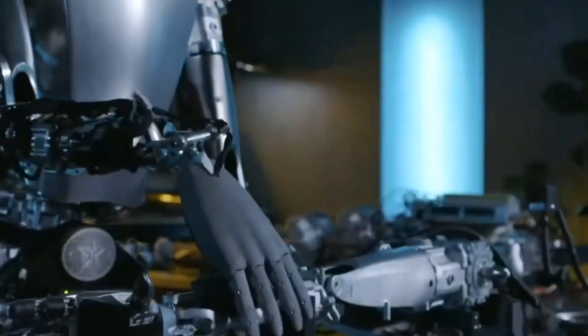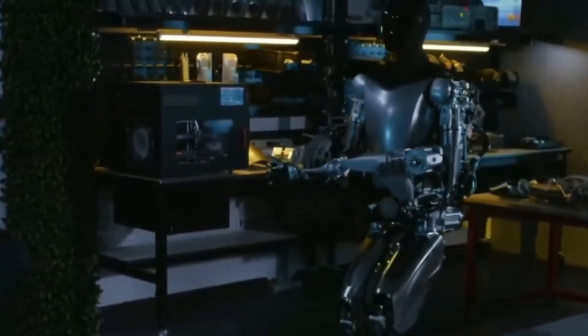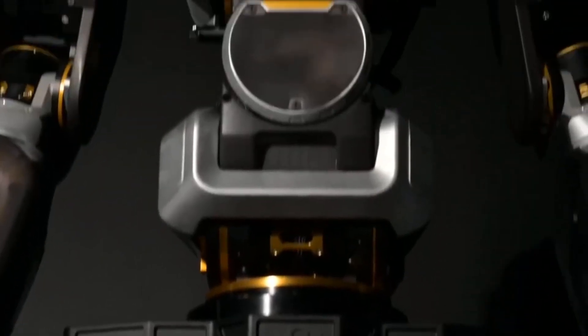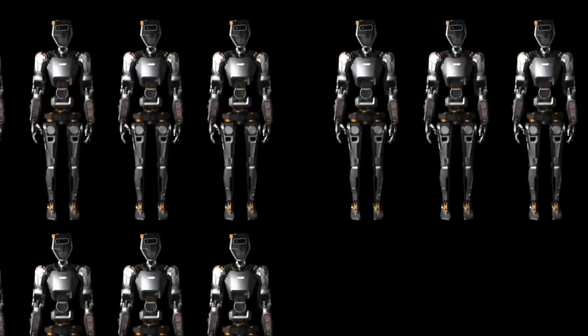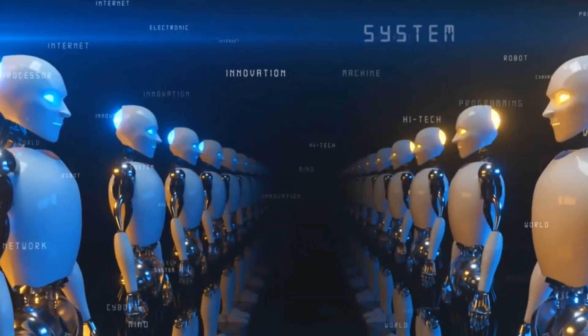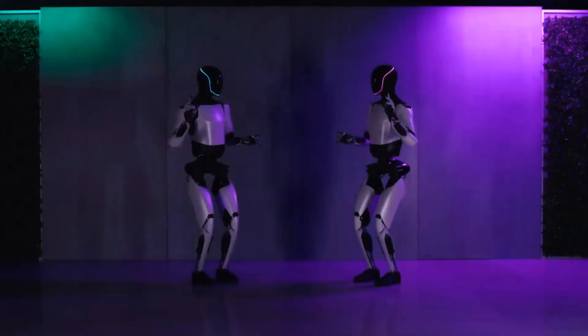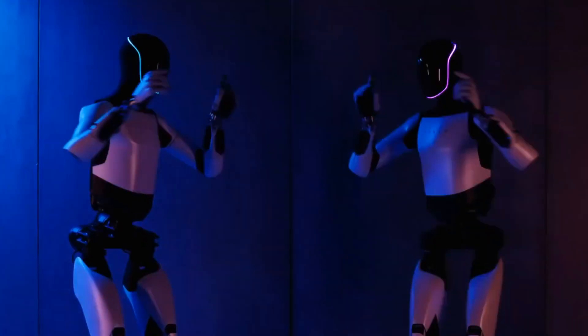Optimus uses special Tesla-designed parts like its actuators and sensors, plus it has this 2-DOF thing in its neck, helping it balance and move super smoothly. So, whether it's doing tricky stuff or gentle tasks, Optimus has got it covered. Now, let's talk about energy. Optimus rocks a 2-3 kilowatt-hour battery, and it's way more efficient than regular robots. This means it can keep going for a long time without needing a ton of recharging.